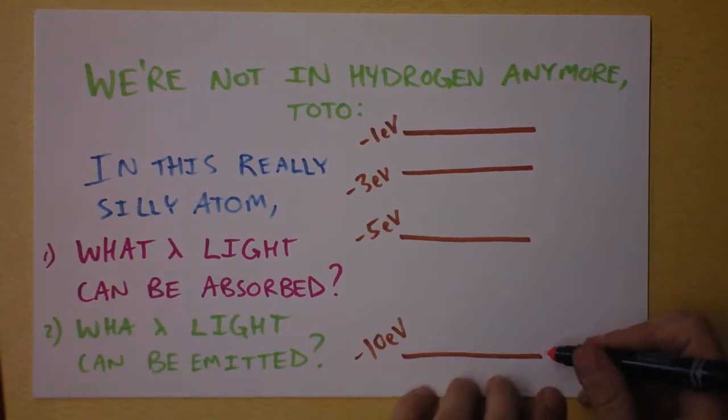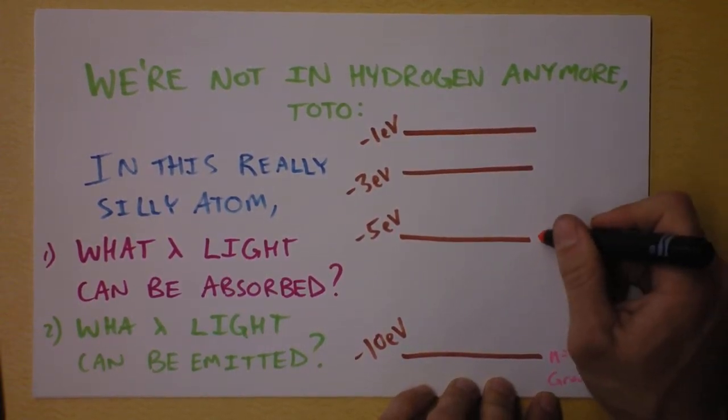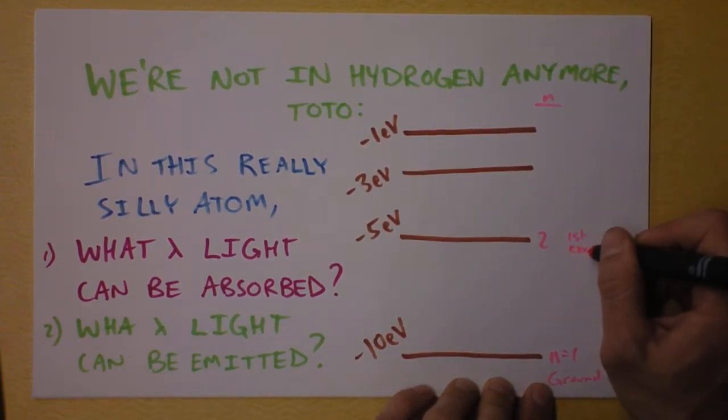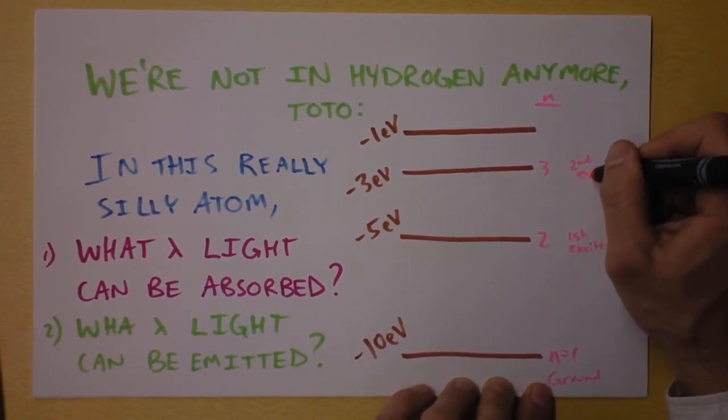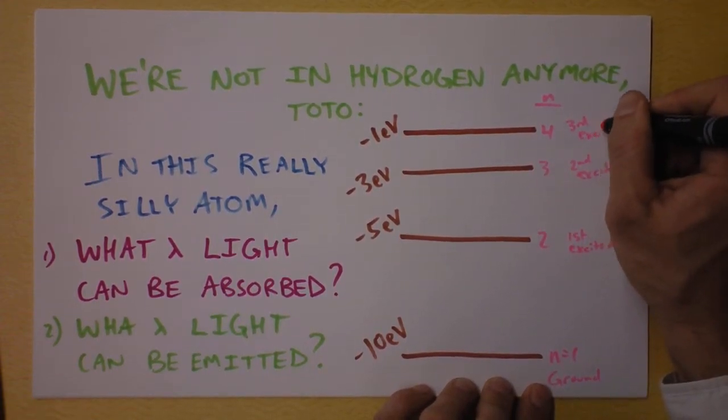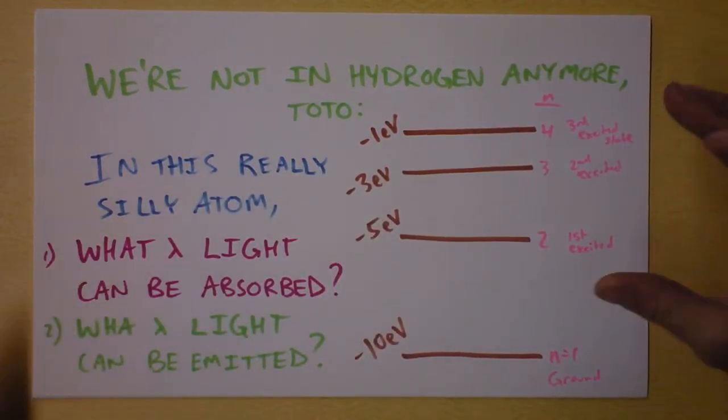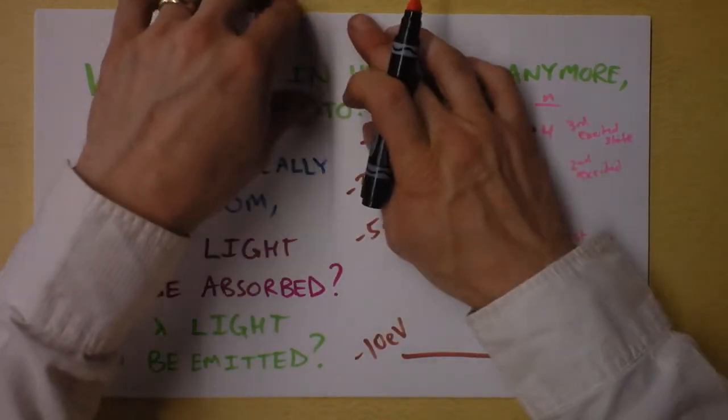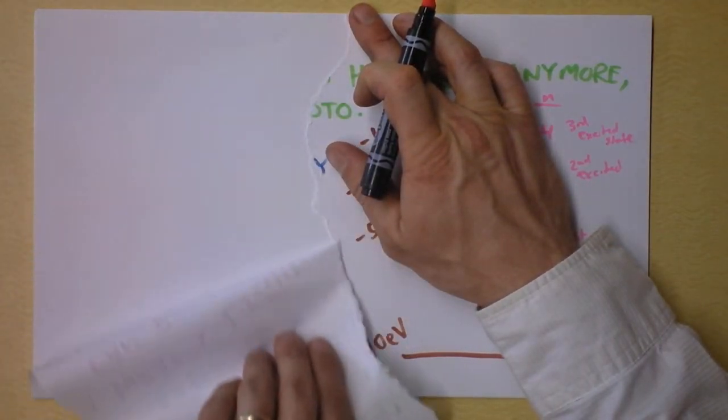First of all, you can label these suckers. This is n equals 1 and we'll call it the ground state. This is n equals 2, the first excited state. This is n equals 3, second excited state. n equals 4, third excited state. That's how quantum-y, how far away we are from the nucleus. I'm going to tear off my question so make sure you've written that down. We want to identify some transitions that can happen here.